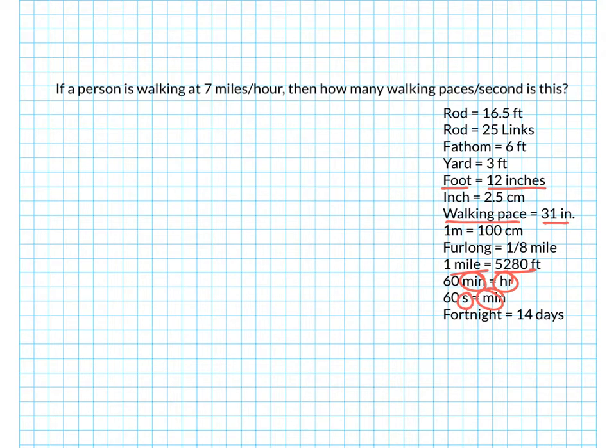So I'm going to start with what I'm given. So I'm given 7 miles per hour. So that's what I'll start with. I'm going to write it down here kind of low because it's going to be a long fraction. So 7 miles per hour is what I'm given.